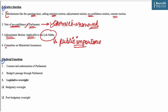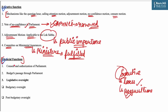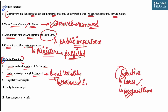Parliament also establishes a Committee on Ministerial Assurances, tasked with examining whether the promises made by ministers to Parliament have been fulfilled. With regard to financial functions, Parliament holds ultimate authority as the conclusive decision maker. The executive is prohibited from imposing or collecting taxes or making acquisitions without Parliament's consent and authorization. The budget, which passes through Parliament, gives legal validity to the government's projected revenue and expenditures for the forthcoming fiscal year.